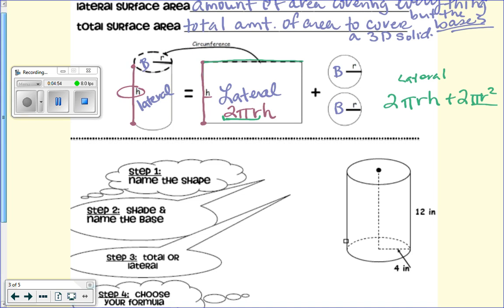So we're finding the area of one circle, right? Times 2 means what? Yeah, you have one, two. Are we good? So that's where it comes from. So we're going to use this part for lateral, and then total we need to include our bases.